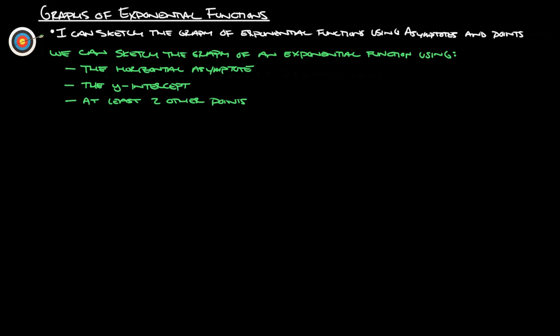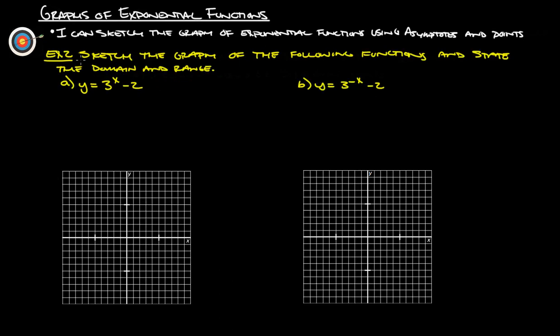So we can sketch the graph of an exponential function using these three things: the horizontal asymptote, the y-intercept, and at least two other points. Using that idea, let's try example two here.